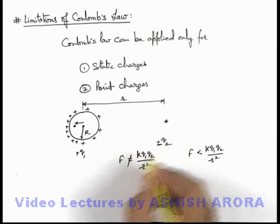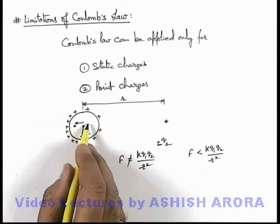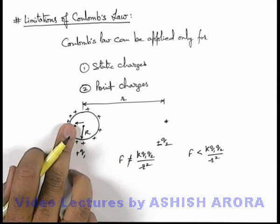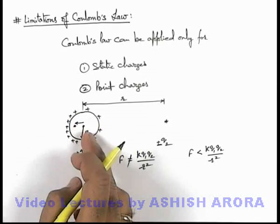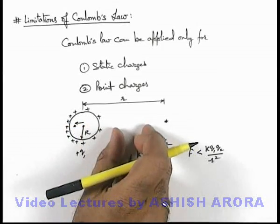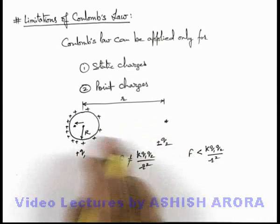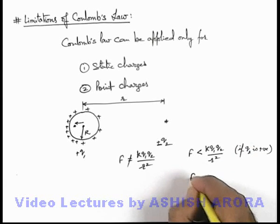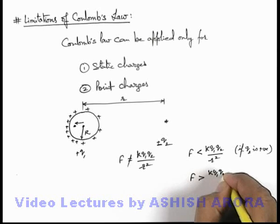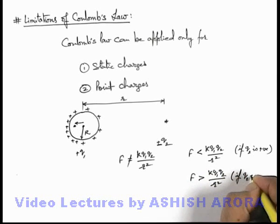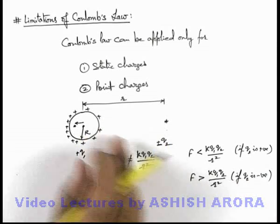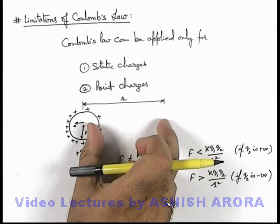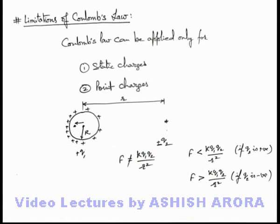Similarly, if this charge is negative, then it will repel the free electrons of the metal body, and due to induction the positive charge density closer to it will be more. The effective distribution of charge is closer, so the force between these two will be less than k·q1·q2 / r² if q2 is positive, and the force will be more than k·q1·q2 / r² if q2 is negative — because if it is negative, the positive distribution will be right of it and the effective separation is less than r, so the force will be more than this value. So always remember: in different cases we apply Coulomb's Law only for static and point charges, which are the limitations for applying Coulomb's Law.